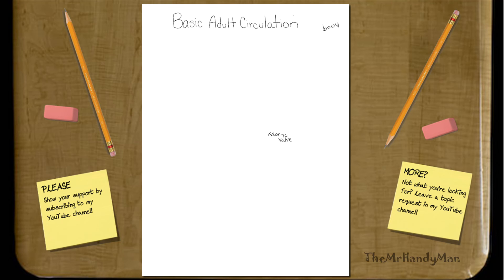This is basic adult circulation through the heart, and I'm going to make it pretty simple because there are a lot of different directions that blood is flowing in the heart. I just want to make it as clear cut as possible because there are a lot of ups and downs.